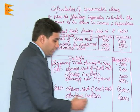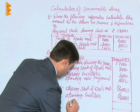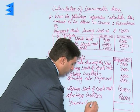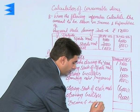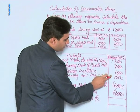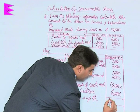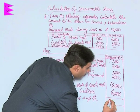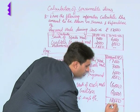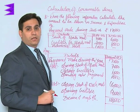Adding it all up to find the balance that should appear in the income and expenditure account: it comes to 26,000 minus 8,000, so the amount should be 18,000 to be debited to the income and expenditure account.